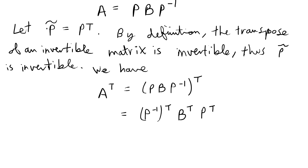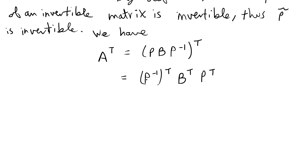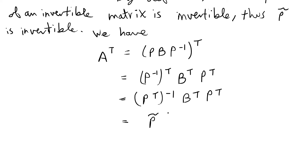We want to plug in P̃, which is P transpose. Using the property that (P⁻¹)^T equals (P^T)⁻¹, we get P̃ inverse times B transpose times P̃. So A transpose is equal to P̃ inverse times B transpose times P̃.